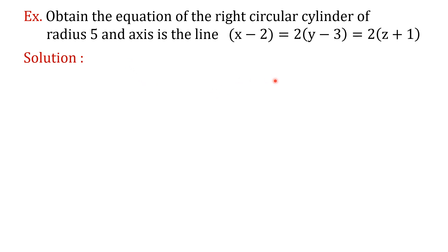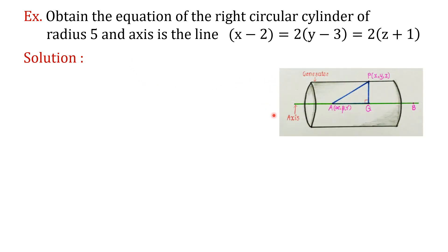In the solution, first we will look at the figure. This is the sketch of the right circular cylinder. AB is the axis of the cylinder. The constant distance PQ is the radius of the cylinder. P is any arbitrary point on the surface of the cylinder, and this line is the generator. When we revolve this generator around the axis AB, the surface we get is called the right circular cylinder.